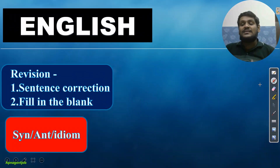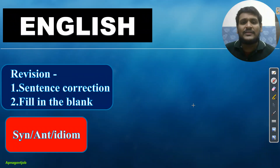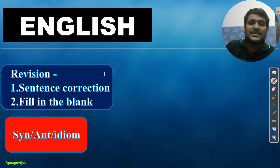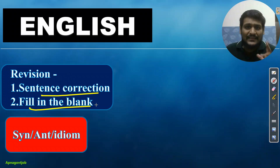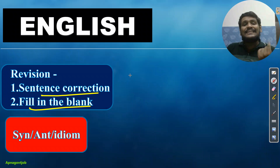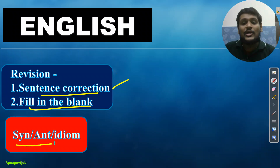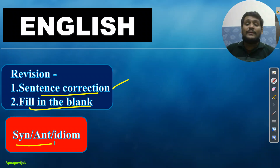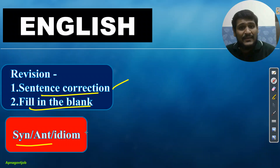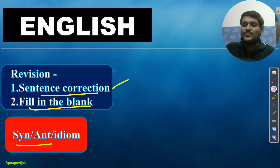For English, you already completed the grammar portion, so just revise that and solve questions from sentence correction and fillers — that is fill in the blanks. If you are done with grammar, you can smoothly handle those two chapters. For synonyms, antonyms and idioms/EDM, daily Telegram PDFs are available — practice from those. Those who have QBox and are success pack students can practice from QBox.